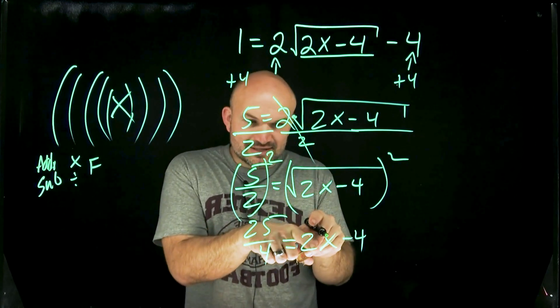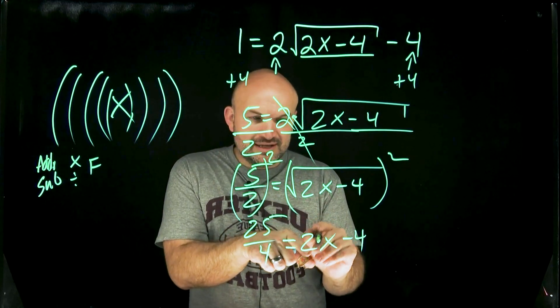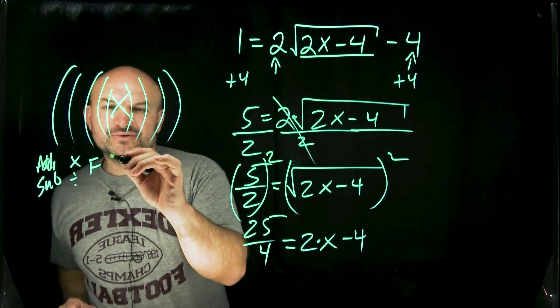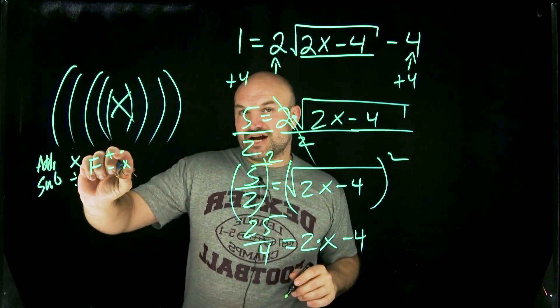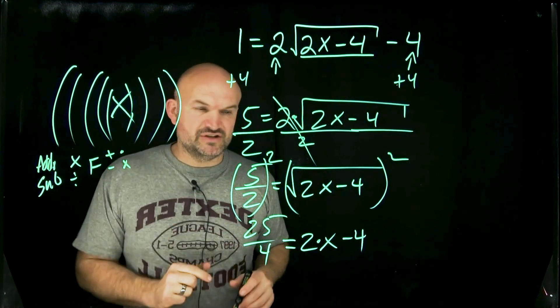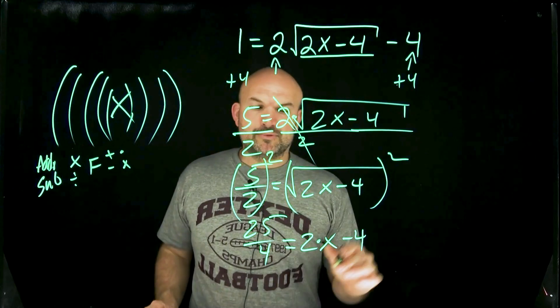Now you see I have an x, right? It's multiplied by 2, subtracted by 4. So now I'm just going to do the same thing that I did before. I'm just going to undo addition and subtraction, and then I'm going to undo multiplication and division. We're always doing our reverse order of operations.